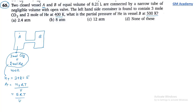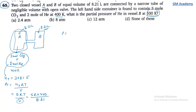Both containers have volume 8.21 liters each. The gases disperse through the open valve. Temperature changes to 500 Kelvin. We need the partial pressure of helium in vessel B. Partial pressure of He = mole fraction of He × total pressure.